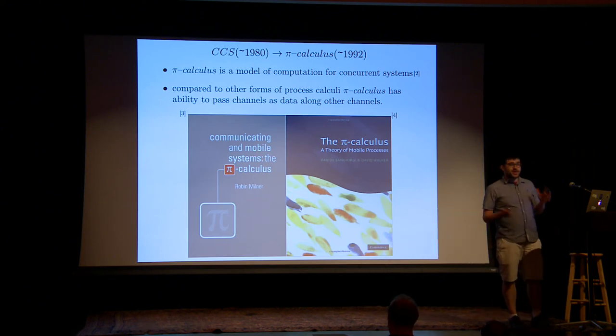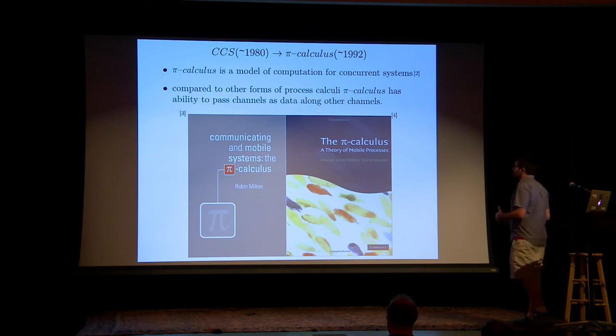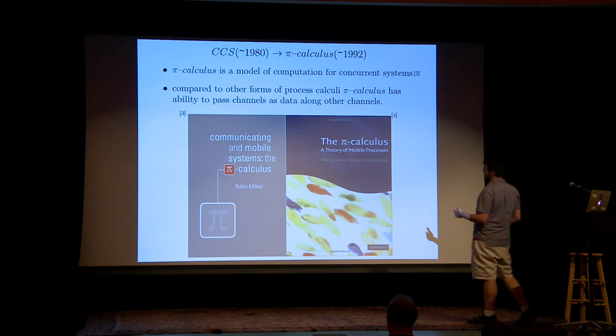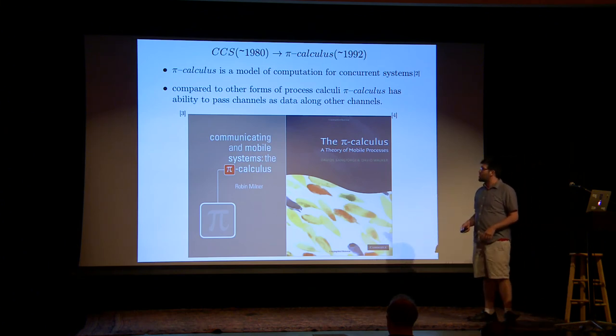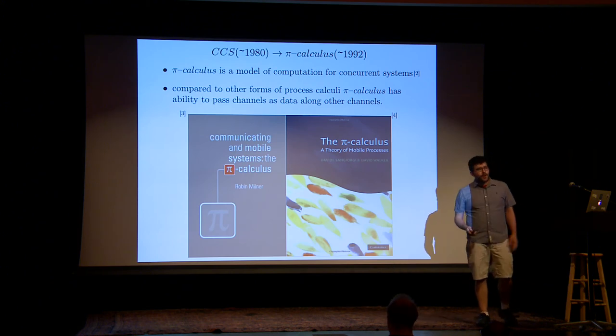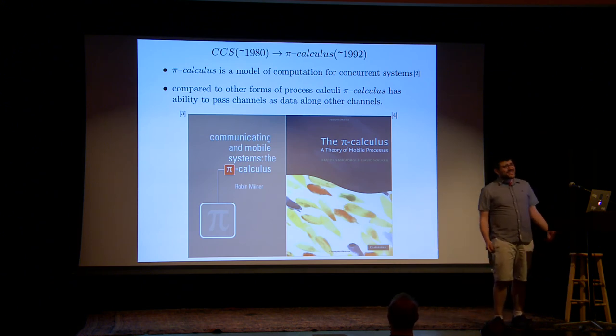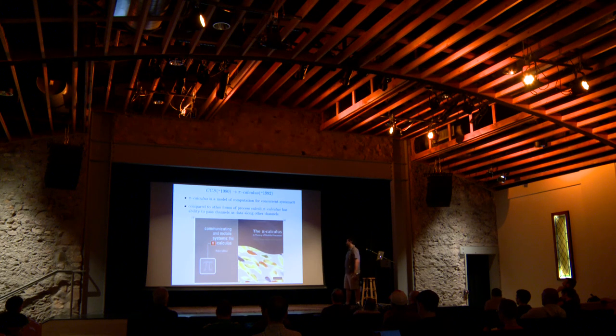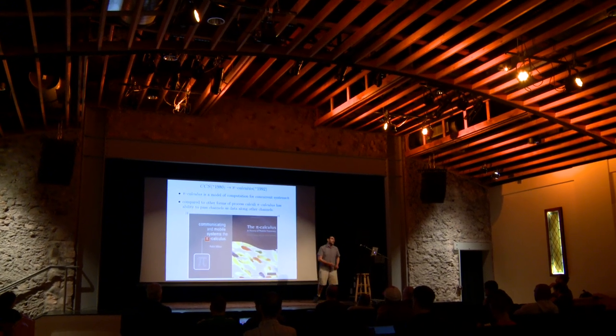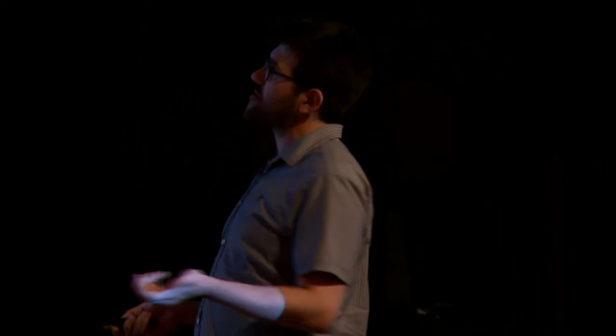Robin Milner had this idea, and I was dumbfounded because I didn't understand things when I first saw his book 'Communicating and Mobile Systems.' I was like, 'Whoa, Robin Milner is really into cell phones.' But processes move — they move from machine to machine, from machines to the same machine, to different cores. Things are complicated. Mobile process mobility is actually what we're really expressing.